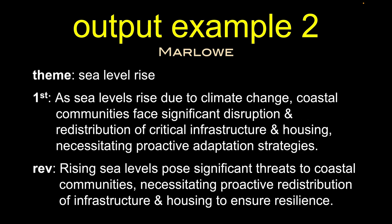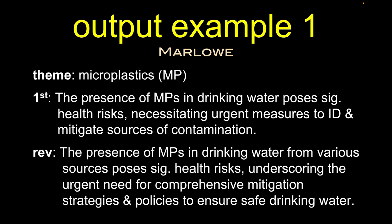A second example — let's talk about sea level rise. The first output was: 'As sea levels rise due to climate change, coastal communities face significant disruption and redistribution of critical infrastructure and housing, necessitating proactive adaptation strategies.' After a lot of revision, the thesis evolved to: 'Rising sea levels pose significant threats to coastal communities, necessitating proactive redistribution of infrastructure and housing to ensure resilience.' In this case I prefer the end-of-path thesis over the starting point, whereas in the microplastics case I actually preferred the first one. This is a process — showing students where they might go, what if you tried this, what about that. It's not meant to give them the answer; it's to lead them down the path and see what works and what doesn't.